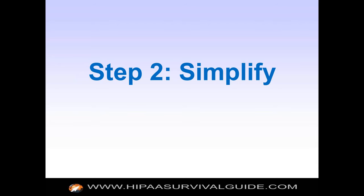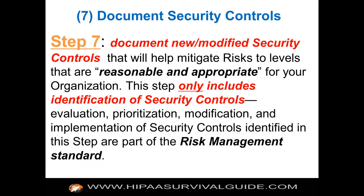Question: could you remind us of the definition of a security object? A security object is a term coined to describe what security controls are applied to. Security objects are going to be an individual, an asset like a phone, PC, laptop, server, or network, or in a more abstract way, your operational workflows. Those are the three categories of security objects, and security controls are applied to those objects.